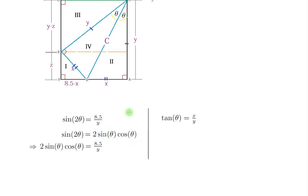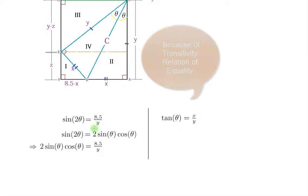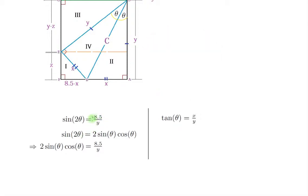Now let's use some trigonometry identities. What is sine of 2 theta? Well, sine of 2 theta equals 2 sine of theta cosine of theta. This implies — by transitivity — that this equality holds, so 2 sine of theta times cosine of theta equals 8.5 divided by Y.